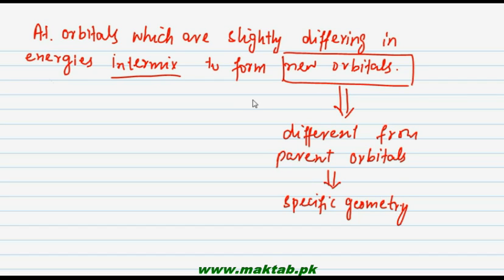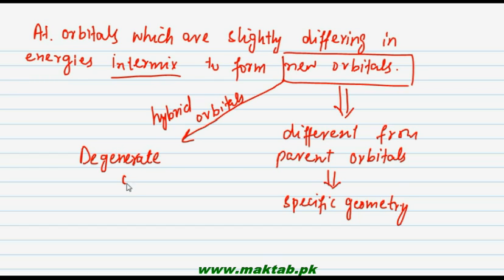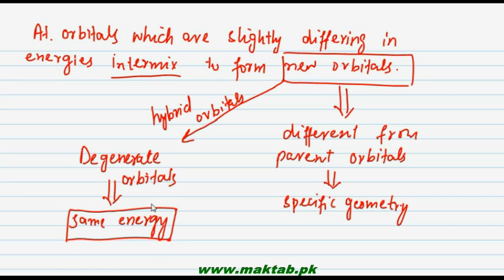यहां पर जो slightly different energy वाला part था — यह जो new orbitals बनेंगे जिनको हम hybrid orbitals भी कहते हैं, they will be degenerate orbitals. अगर आप अपने 5th chapter को recall करें तो degeneracy की बात हमने की थी — degenerate orbitals are those orbitals which have same energy. तो hybridization के नतीजे में वो atomic orbitals जिनकी energies different होती हैं वो intermix होके नए orbitals बना लेते हैं, and they are different from their parent orbitals. यह general concept था of hybridization.